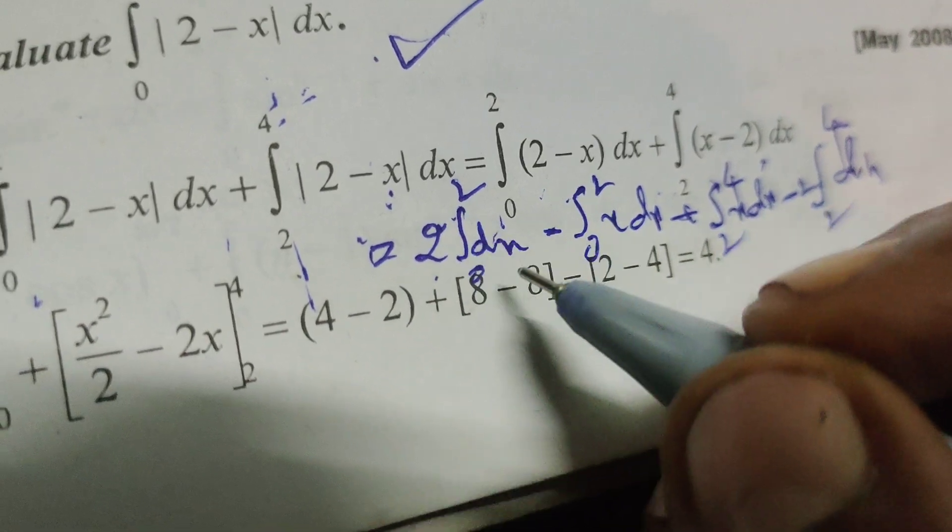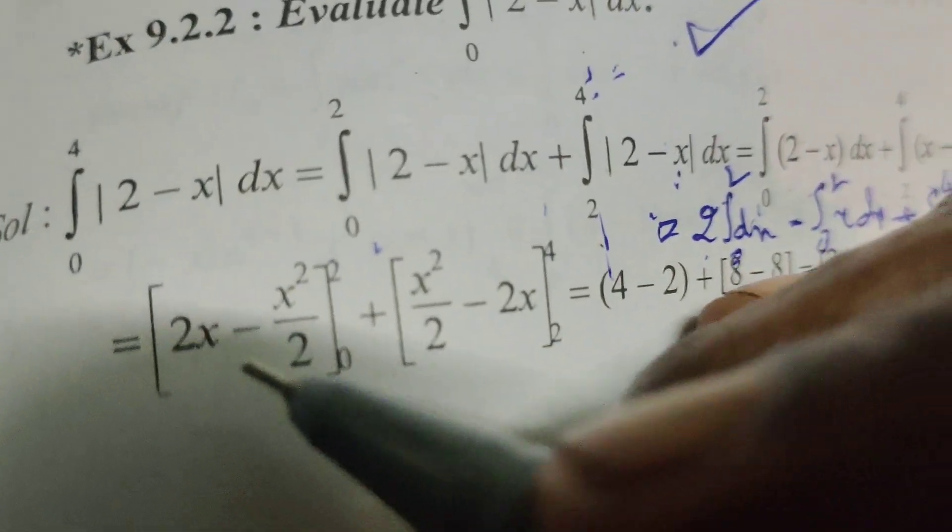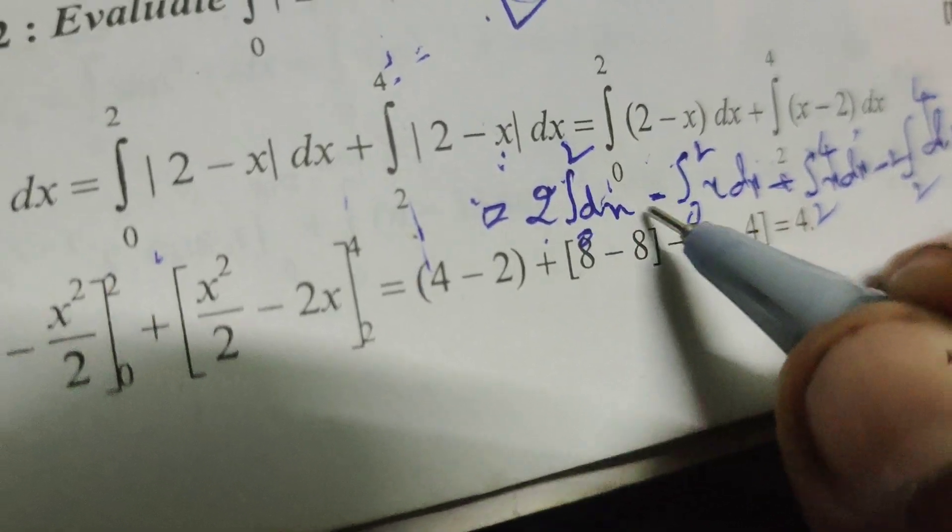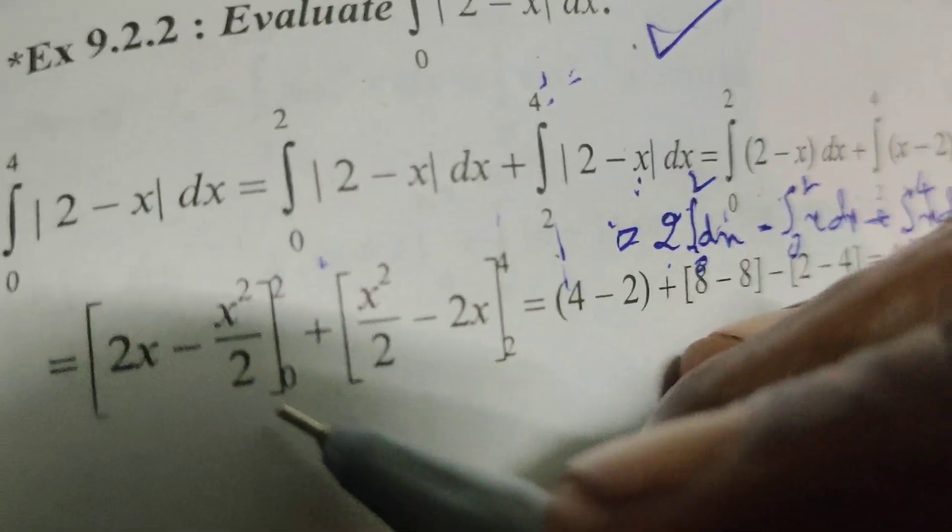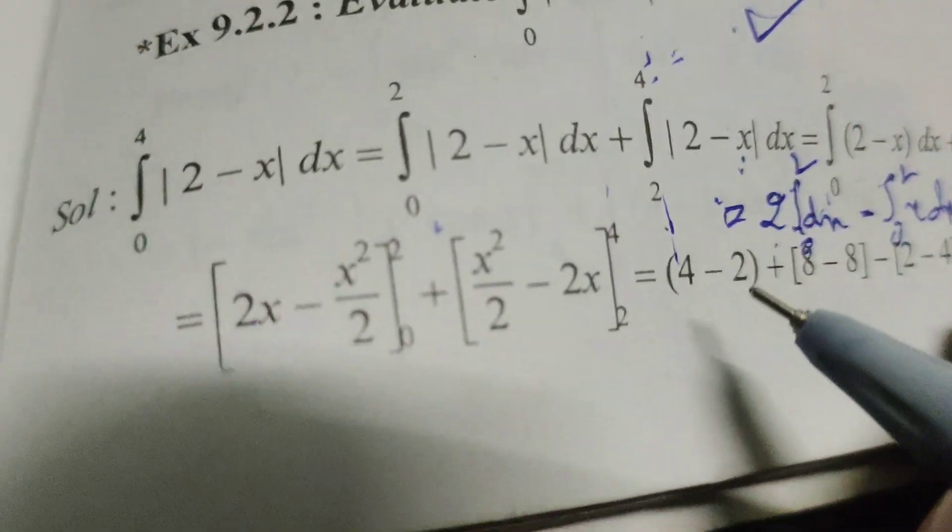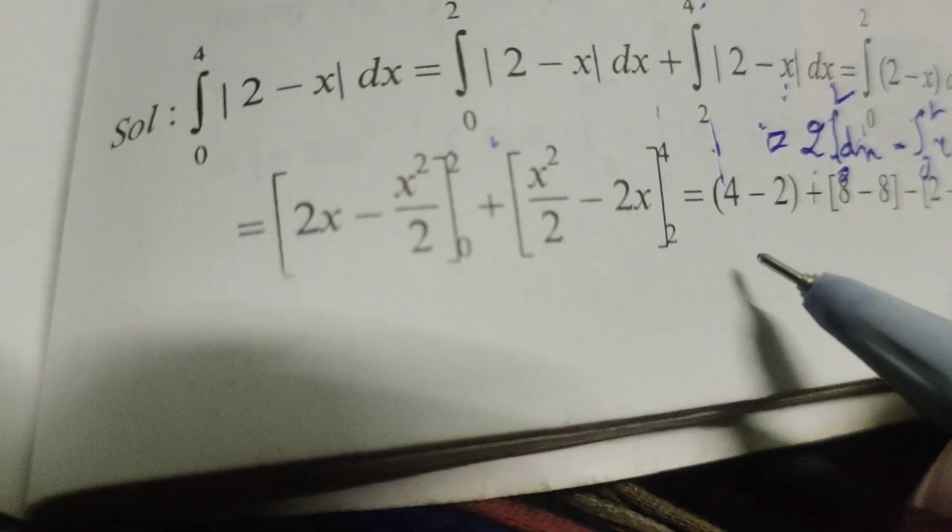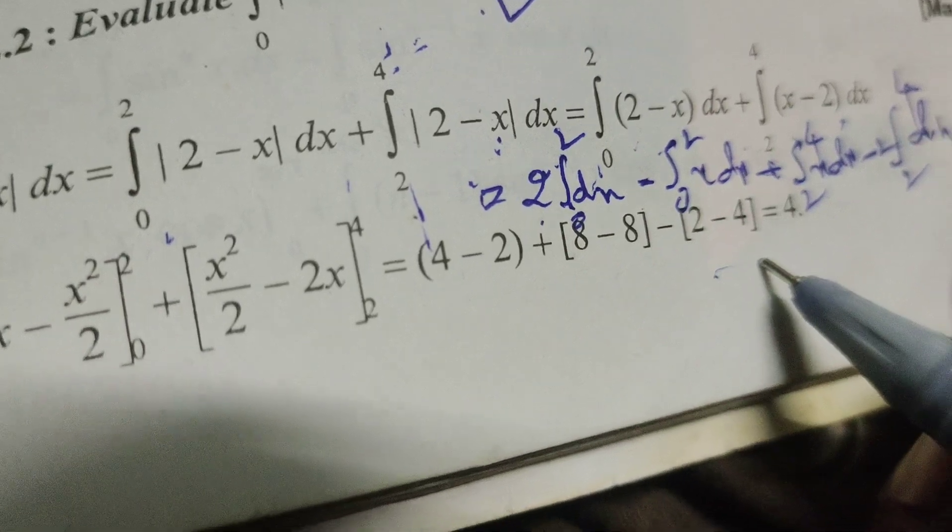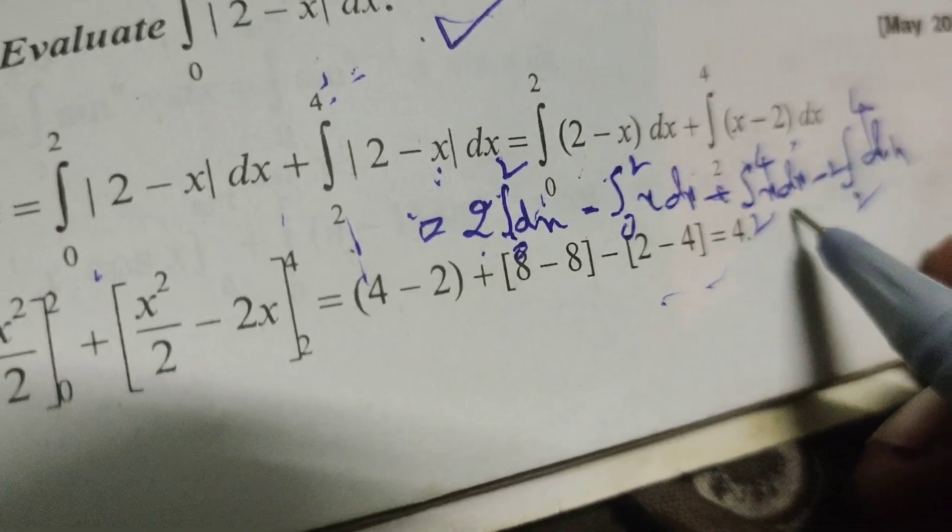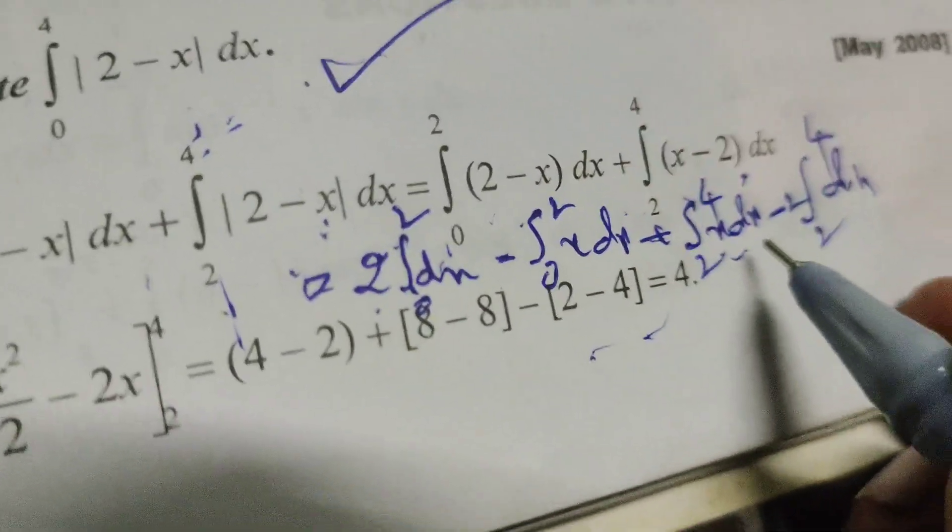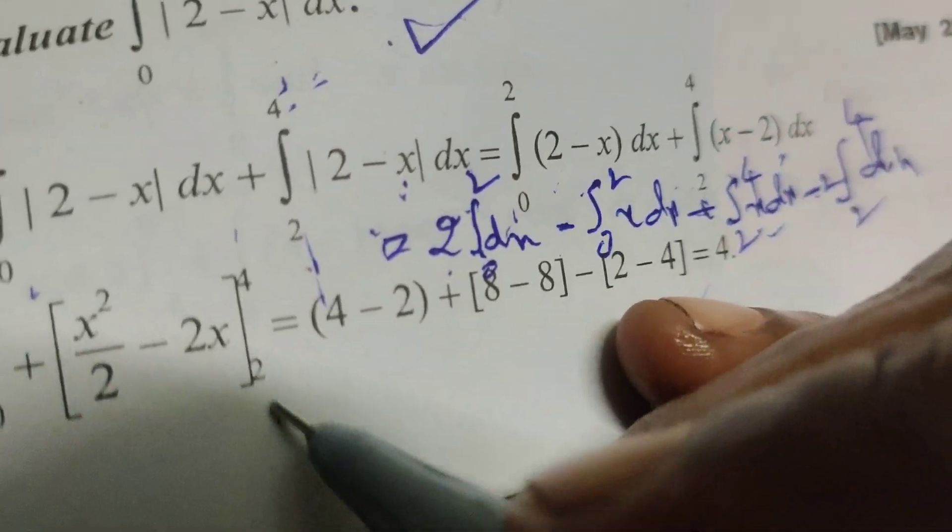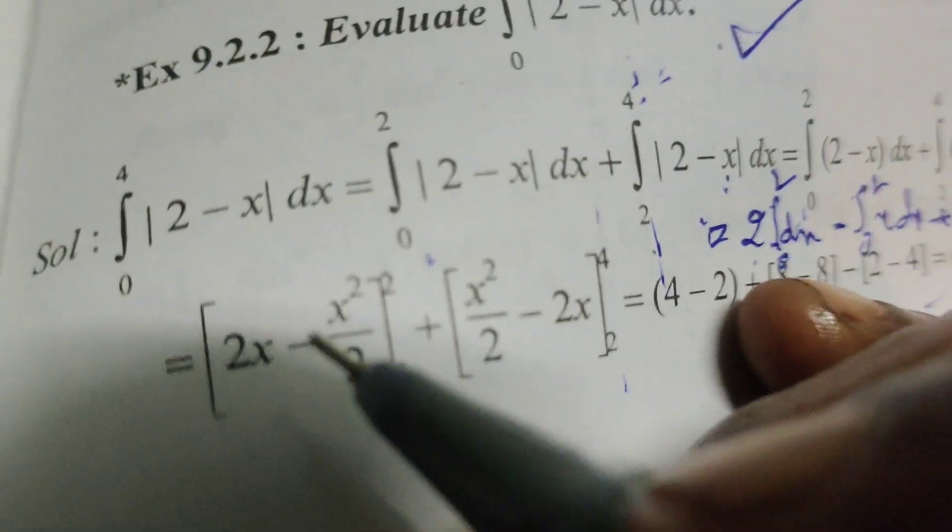After integrating, we get: [2x - x²/2] from 0 to 2 plus [x²/2 - 2x] from 2 to 4.